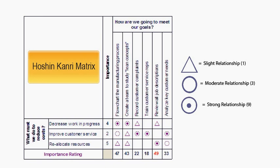Now we take the values in each cell and add them up to determine a final importance rating at the bottom of the matrix. 36 plus 6, plus 5, equals 47. Now we know how important it is to flow chart the manufacturing process. We would go through this process for each how in the matrix. At the end of this process we know that the most important thing we could do would be to review all job descriptions, because that how received the highest rating: 49.